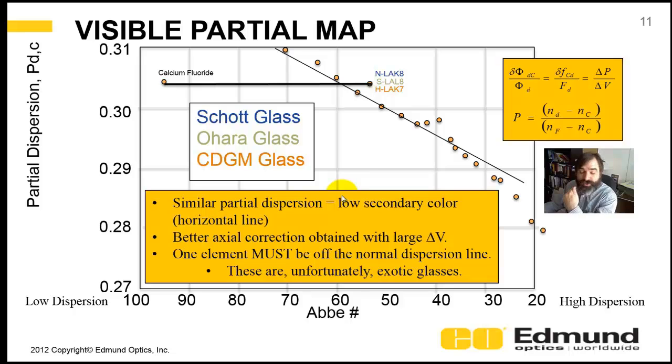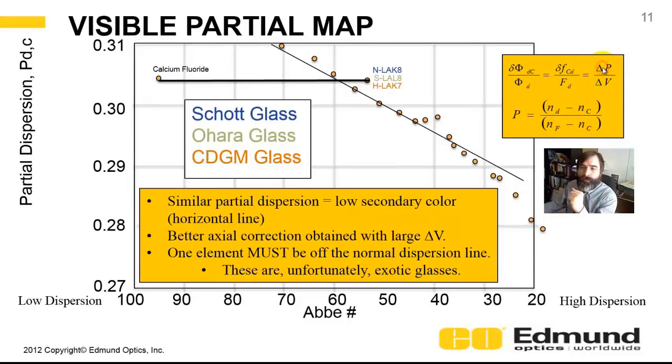So how do we use the partial map? How do we get information out of it? Now, recall we want matched partials. We have matched, the closer the partials are, the lower the secondary color. And you want, so you want a line that is as long as, a horizontal line that's as long as possible. And to do that, you have to have a glass that falls off this normal line. In this case, I've shown calcium fluoride. It ends up being a pretty good match with S-LAL8, if you like, O'Hara. The problem is, when these glasses fall off this glass line, they tend to be exotic and a little bit more expensive.